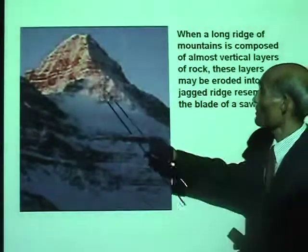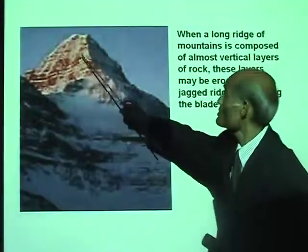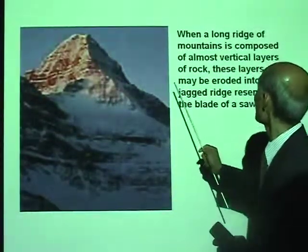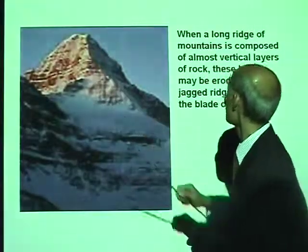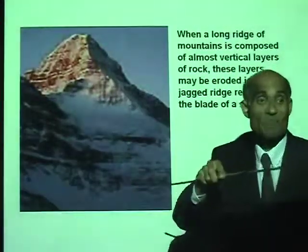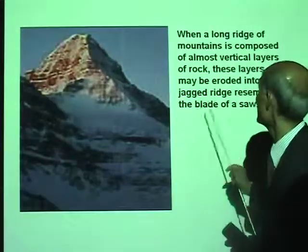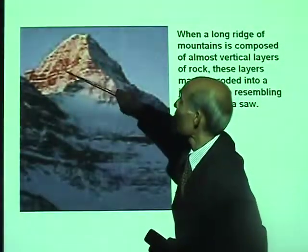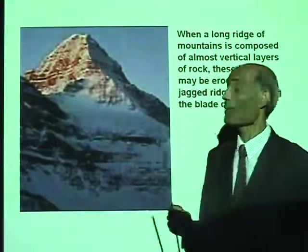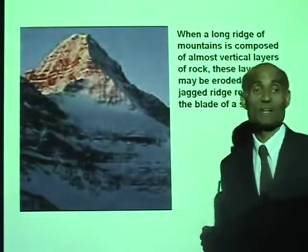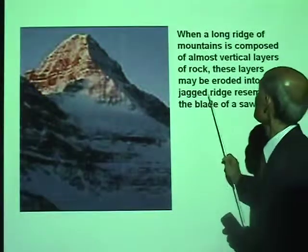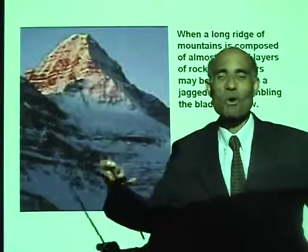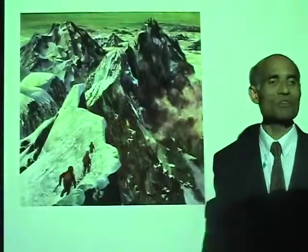Here is another example of an erosional mountain. When a long ridge of mountain is composed of almost vertical layers, these layers may be eroded by wind and rain into a jagged ridge — you can see they look like steps, which you could actually climb to the top. Eroded into a jagged ridge resembling the blade of a saw. All these are caused by the erosional forces in nature.